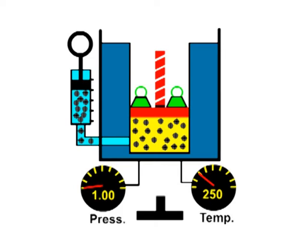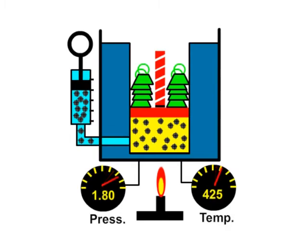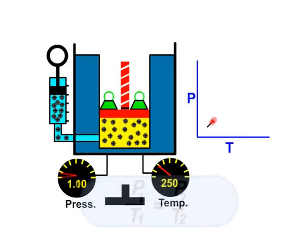For a given gas, if the temperature changes from T1 to T2 and the pressure changes correspondingly from P1 to P2 at constant volume, then from Gay-Lussac's law, P1 by T1 is equal to P2 by T2.